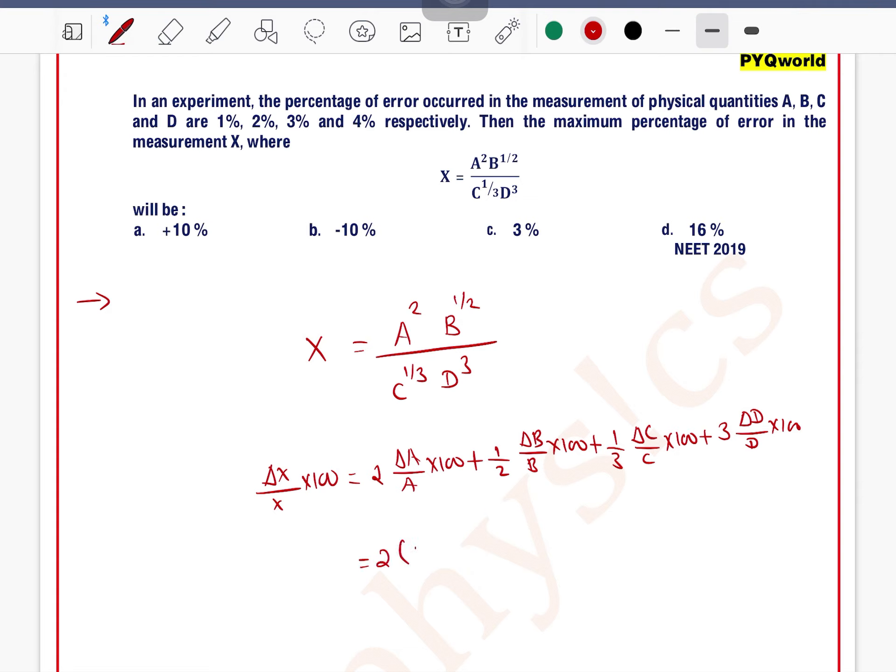Percentage error in A is 1%, percentage error in B is 2%, percentage error in C is 3%, percentage error in D is 4%.